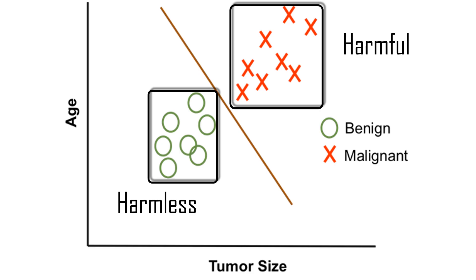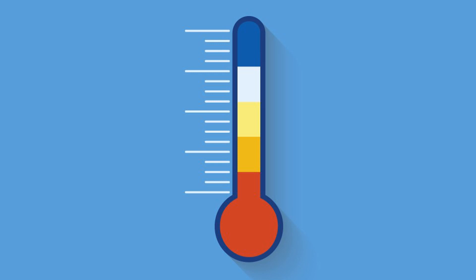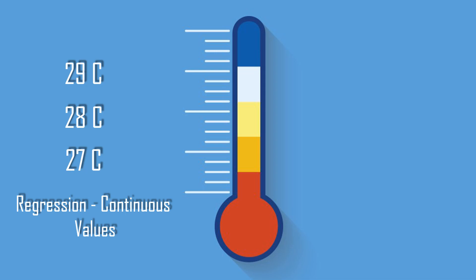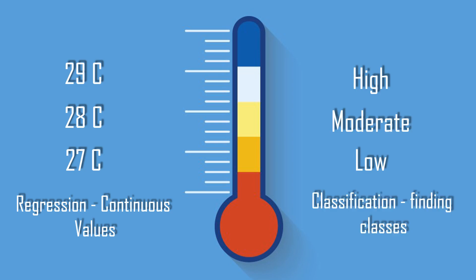If I say the temperature is 27 degrees Celsius or 28 degrees Celsius, I'm giving the actual continuous value — 27, 28, 29, 30. If you want to predict that continuous value, that is regression. But if I say the temperature is high, low, or moderate, I'm talking about classes, not actual values. So these are the classes — that is classification.